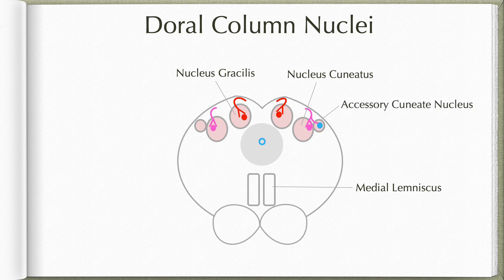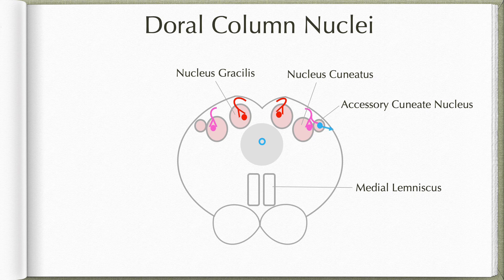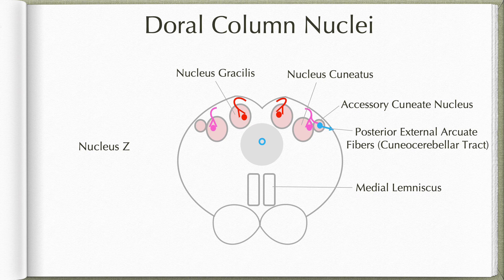Accessory cuneate nuclei are located lateral to the nucleus cuneatus. They receive lateral fibers in the fasciculus cuneatus which carry proprioceptive information from the ipsilateral upper limbs, and convey this information to the cerebellum through the posterior external arcuate fibers or the cuneocerebellar tracts. The fourth nucleus is nucleus Z, located just cranial to the nucleus gracilis. It conveys conscious proprioceptive information from the ipsilateral lower limb to the contralateral thalamus through the medial lemniscus pathway.